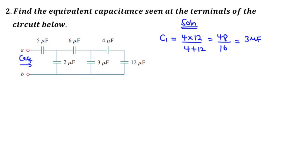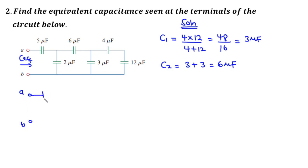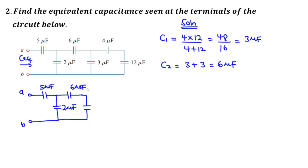This 3 microfarads will be in parallel with another 3 microfarads, so we call that C2. Because they are in parallel, we add them: 3 plus 3 equals 6 microfarads. Redrawing the circuit, we have terminals A and B with a 5 microfarad capacitor, a 2 microfarad capacitor, a 6 microfarad capacitor, and the solved 6 microfarad combination.